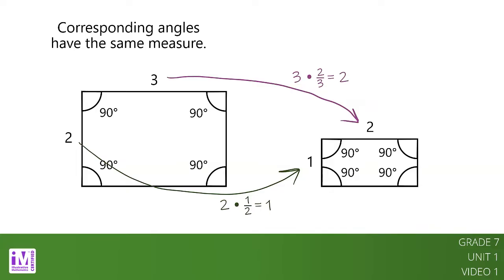Different pairs of corresponding lengths have different scale factors. So the second rectangle is not a scaled copy of the first rectangle.